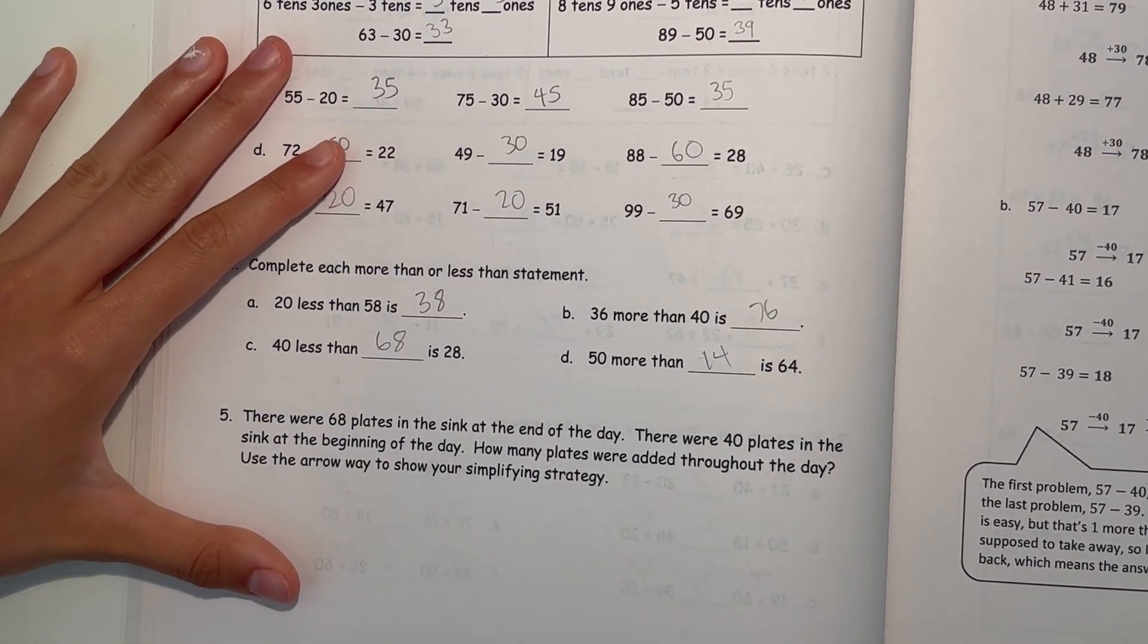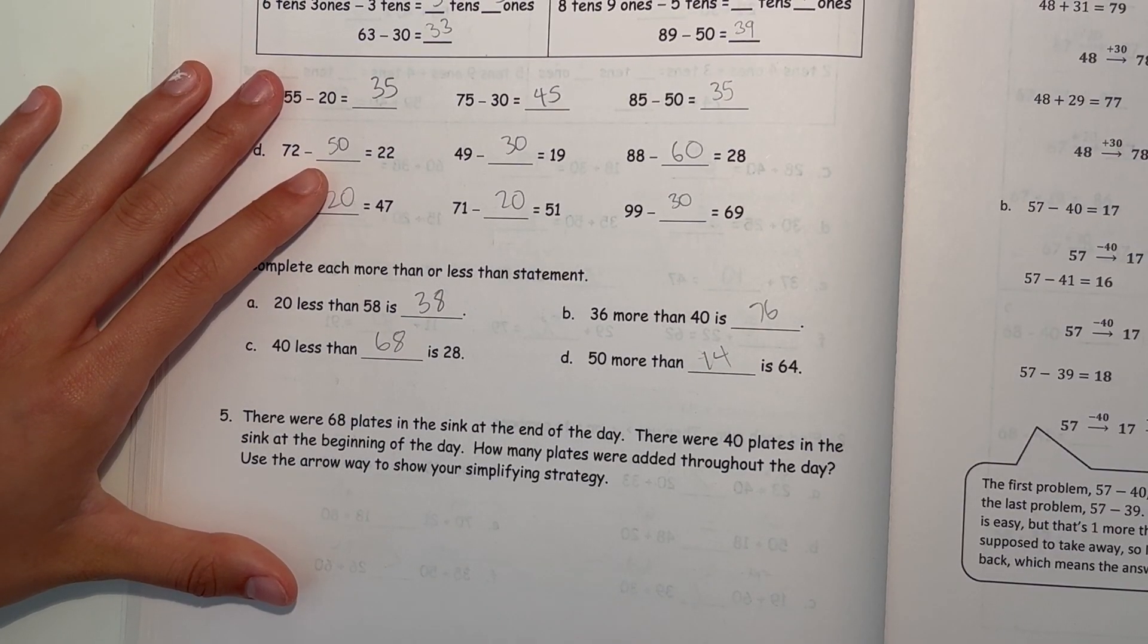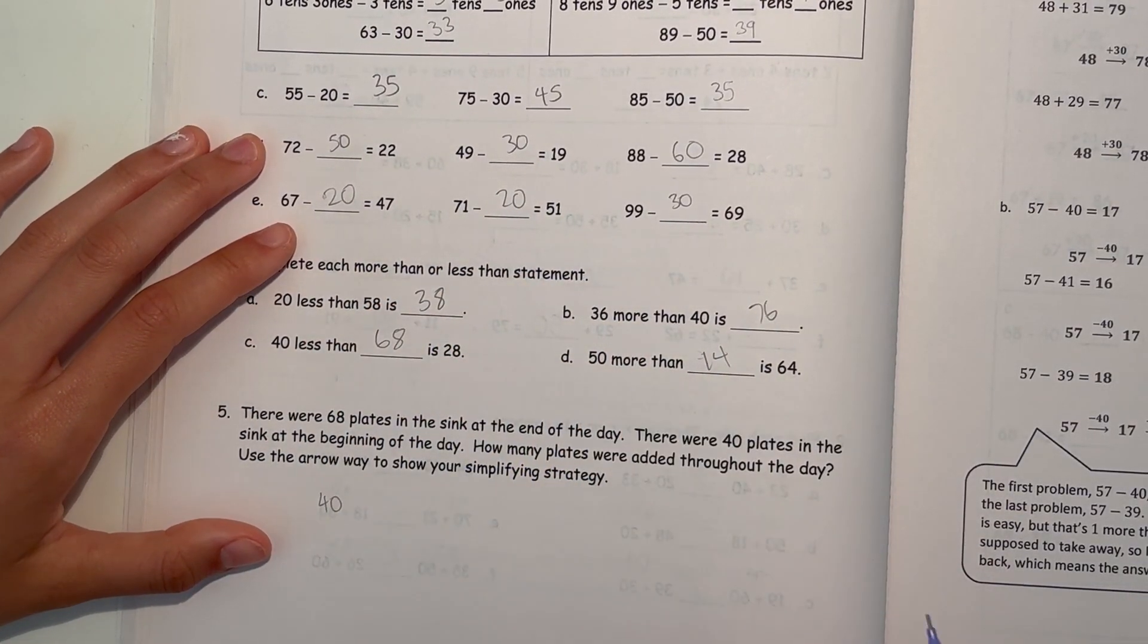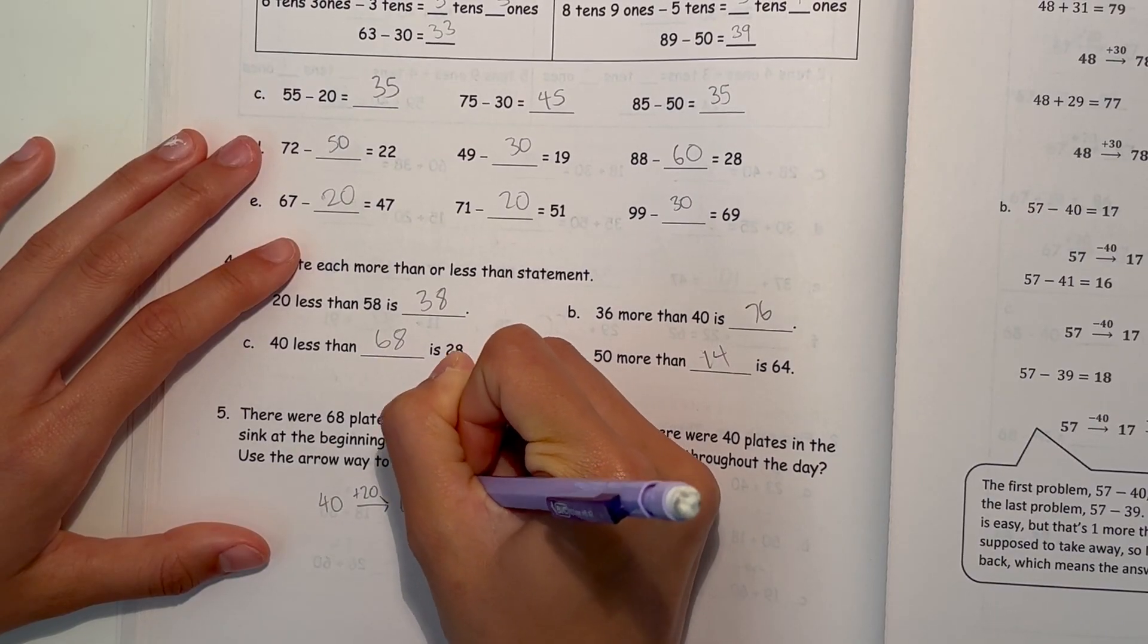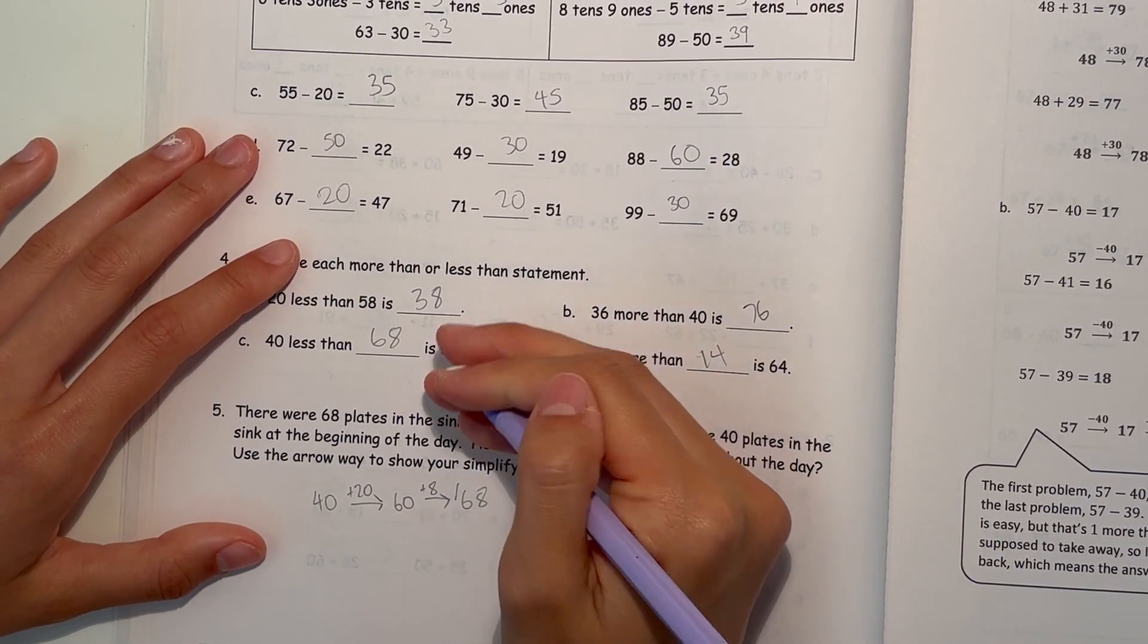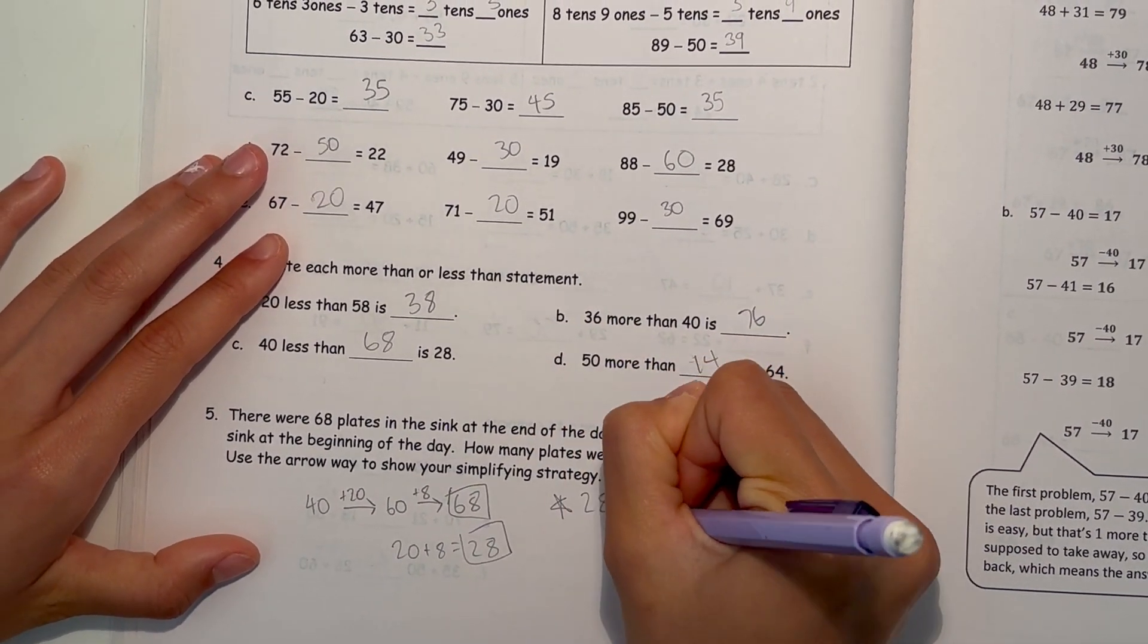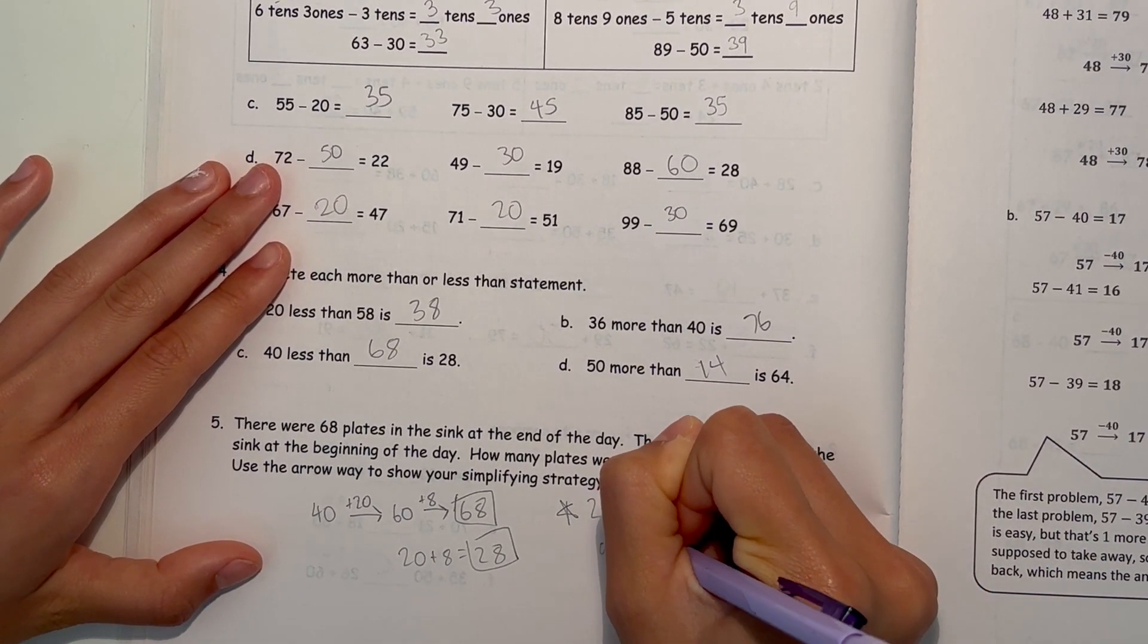Alright, now number 5. There were 68 plates in the sink at the end of the day. There were 40 plates in the sink at the beginning of the day. How many plates were added throughout the day? Use the arrow way to show your simplifying strategy. Alright, well, first, there were 40, and how did it get to 68? First you plus 20, get to 60, and then add the 8 ones, to get to 68. So 20 plus 8 equals 28, so that means 28 plates were added.